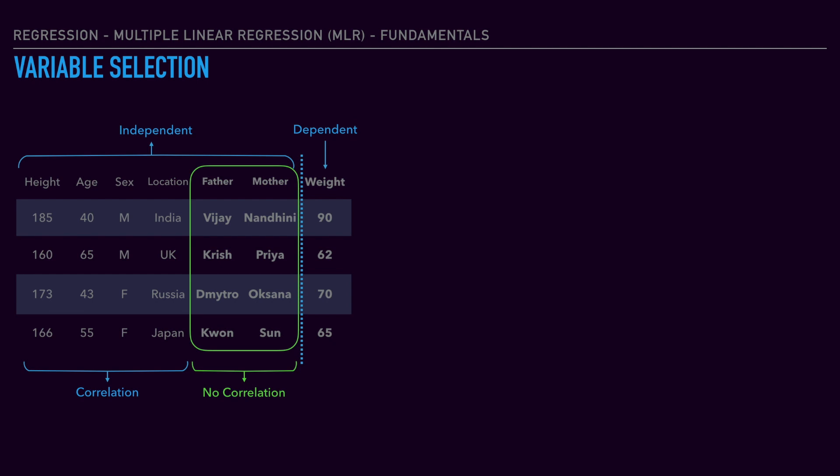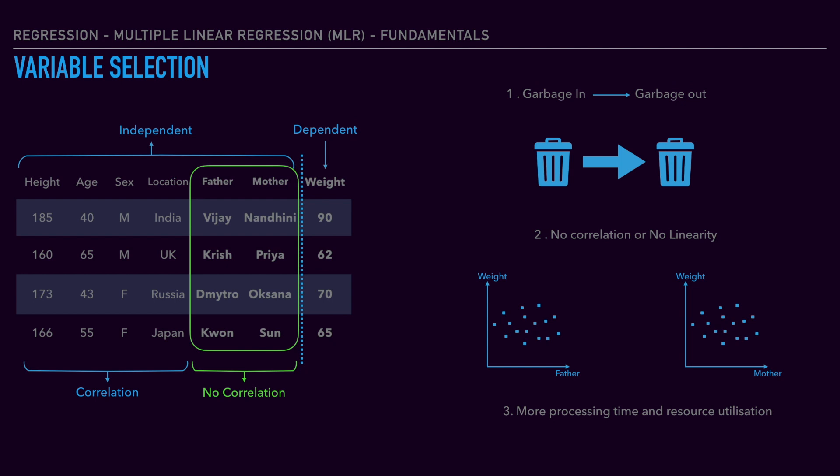Irrelevant data or data which has no linearity with the dependent variable should not be included. First, garbage in equals garbage out. Second, if there is no linearity or correlation, we should not include it according to our assumption 1 for linear regression. Third, it will consume more processing time and resources which will impact model performance.